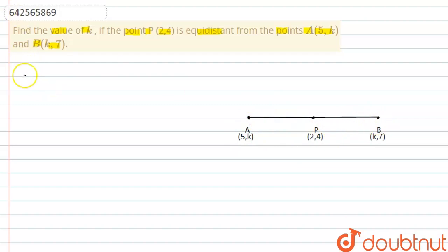So here we'll take the points as A is given as (5,k). So we can take this as (x₁,y₁). Then we have P point as (2,4). So we can take this as (x₂,y₂). Then we have B point as (k,7). We'll take this as (x₃,y₃).